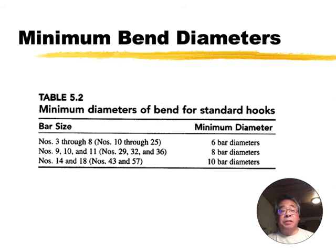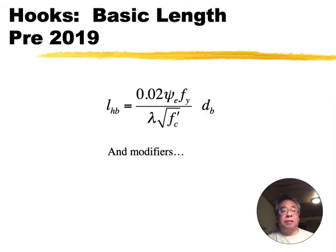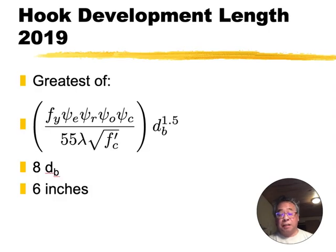But what you do need to know is the development length of the hook - how long does that hook need to be so that the bar won't slip out of the column. This changed in 2019, just last year. Here's the old equation, pre-2019. And here's the new equation, significantly different. This is starting last year, there's all kinds of things that are different.